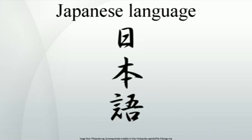For example, ii desu (it is okay) becomes ii desu ka (is it okay?). In a more informal tone, the particle no is added instead to show a personal interest of the speaker: doushite konai no (why aren't you coming?). Some simple queries are formed simply by mentioning the topic with an interrogative intonation: kore wa (what about this?), onamae wa (what's your name?).